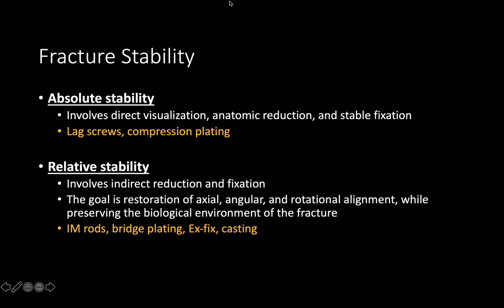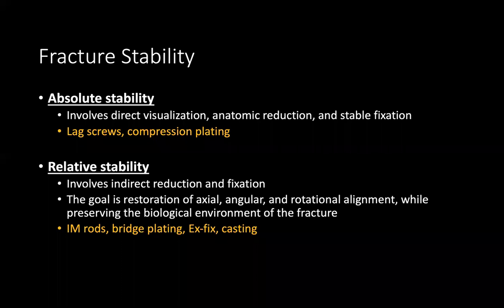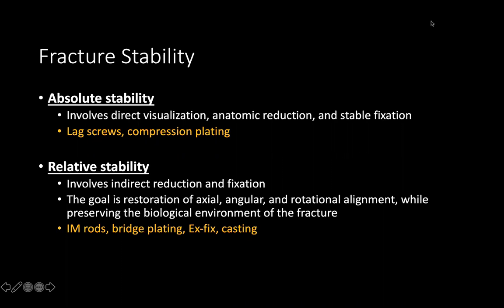Relative stability involves indirect reduction and indirect fixation. You're restoring axial, angular, and rotational alignment — this is where we have very comminuted, very displaced fractures. You want to preserve the biological environment of the fracture: the periosteum, the arterial supply, and venous return of nearby structures. We reduce these via intramedullary rods, bridge plating, external fixation, or even casting with immobilization.